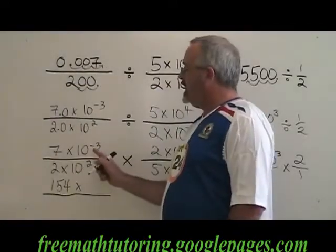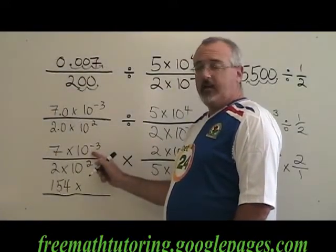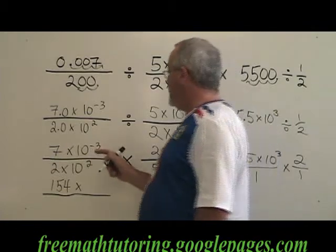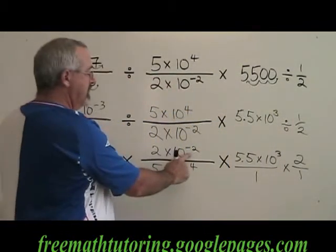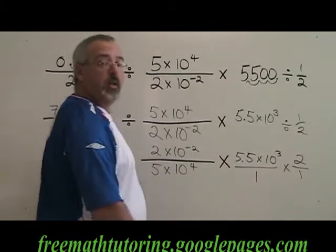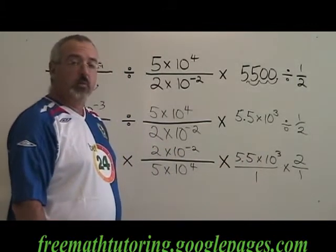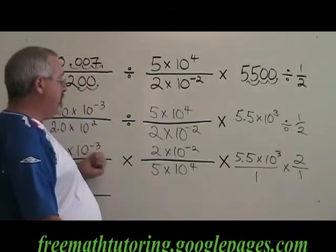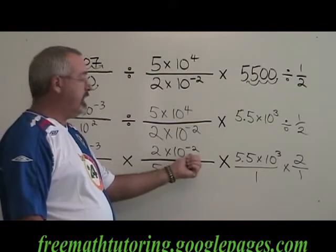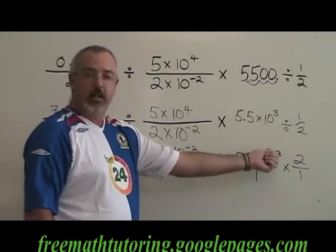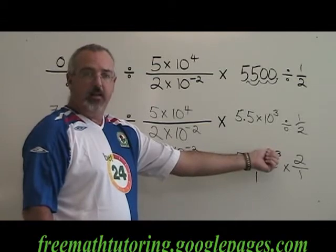Now we're going to work with the powers of 10 in our numerator. We have 10 to the negative 3 times 10 to the negative 2 times 10 cubed. What we're doing is we're adding the exponents because we're multiplying. So, negative 3 plus negative 2 is negative 5 plus 3 is negative 2. We end up with 10 to the negative 2.